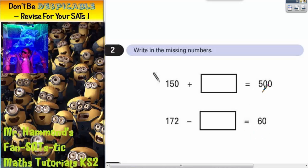Well, if we start with 500 and we subtract this 150, whatever's left will be this mystery number. So we're going to do a column method. So it's 500 subtract 150, and whatever's left will be this number here.